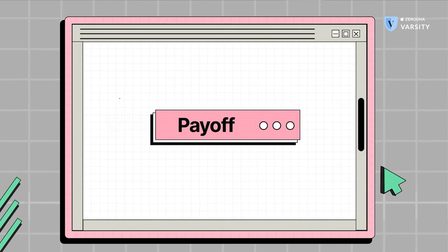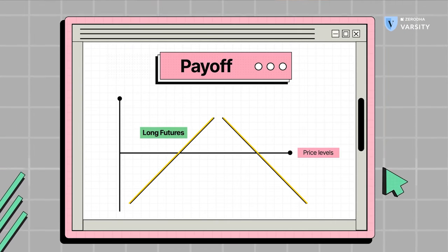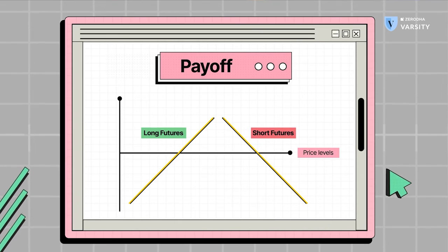Another important part about understanding derivatives is the payoff graph. The payoff graph is a visual representation at what points do you break even, make a profit or possibly make a loss. But let's understand how this works in the futures context.